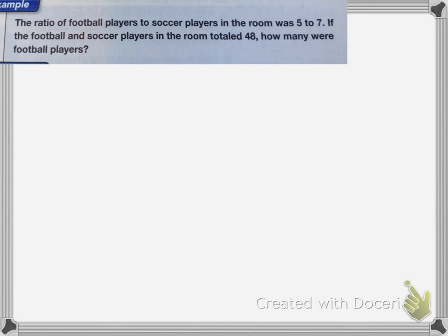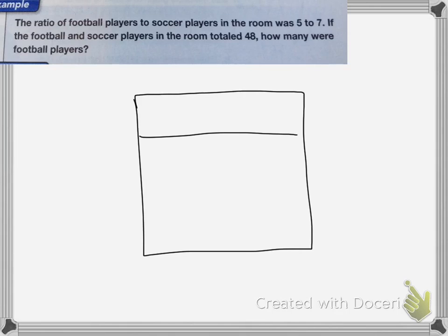One more example. The ratio of football players and soccer players in the room was 5 to 7. If the football and soccer players in the room totaled 48, how many were football players? So again, draw my ratio box. Ratio, actual count.